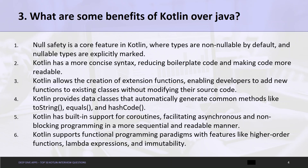Fourth, Kotlin provides data classes that automatically generate common methods like toString, equals, and hashCode. Fifth, Kotlin has built-in support for coroutines, facilitating asynchronous and non-blocking programming in a more sequential and readable manner. Sixth, Kotlin supports functional programming paradigms with features like higher-order functions, lambda expressions, and immutability.